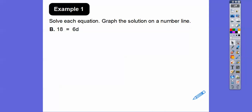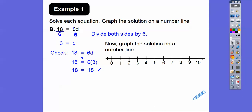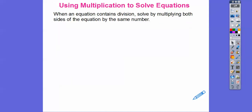For 18 = 6d, the variable is on the right-hand side. We divide both sides by 6 — the 6 cancels on the right, and 18 divided by 6 is 3, so d = 3. Check: does 18 equal 6 times 3? It sure does. Graph the solution: bubble in 3 on the number line.